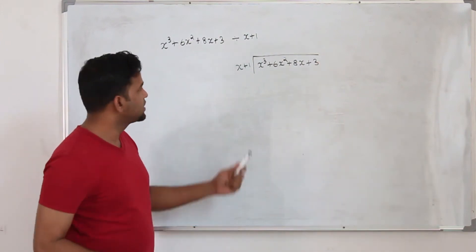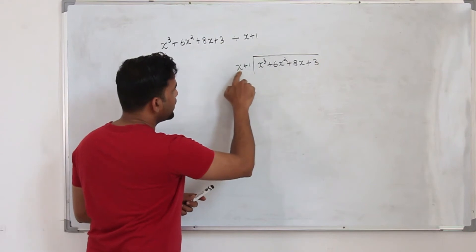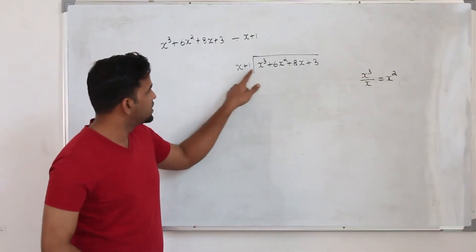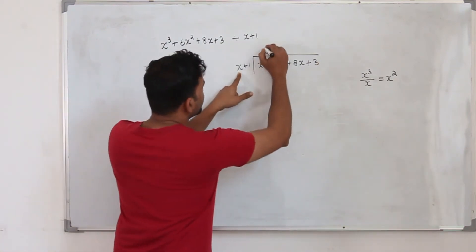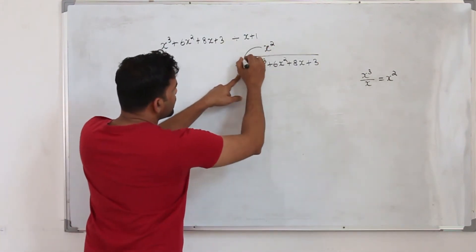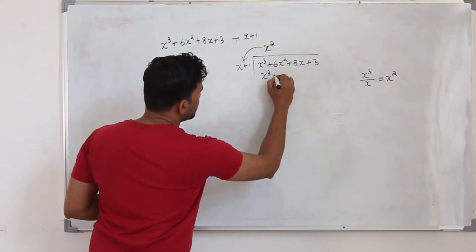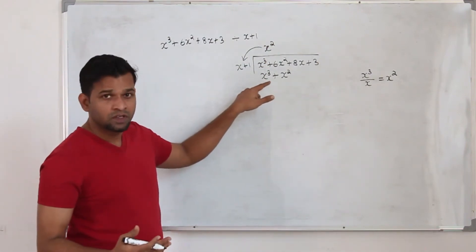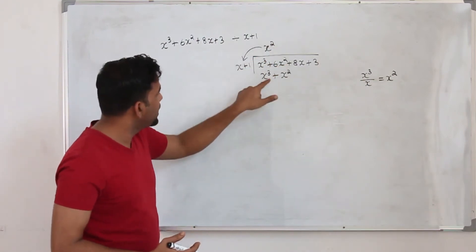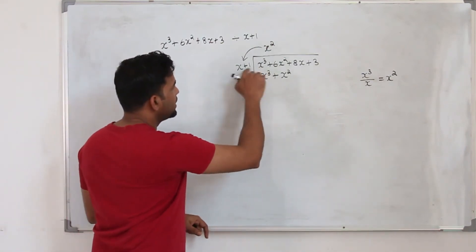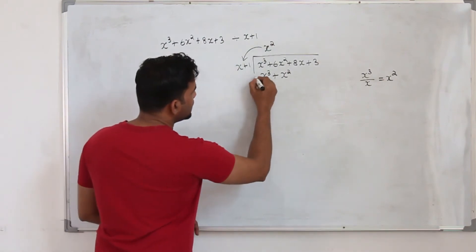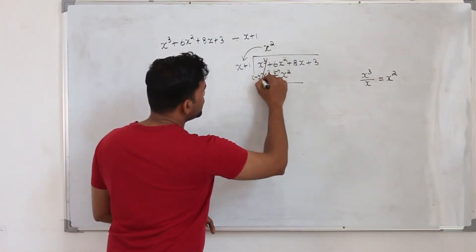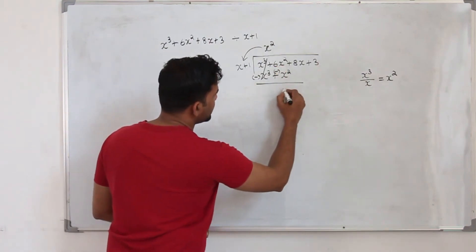How do we apply the long division method? Take the first term x³ and divide by the first term of the divisor: x³÷x = x². Write x² as the first term of the quotient. Multiply x² by (x+1): you get x³+x². Change the sign — always change the sign, minus to plus or plus to minus. x³ cancels, and 6x²−x² = 5x².